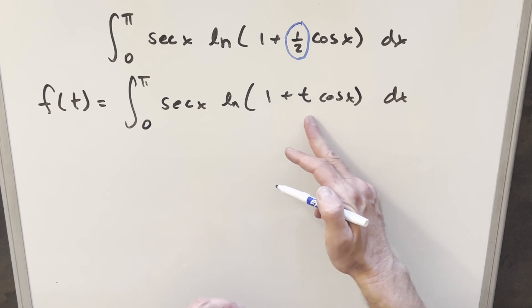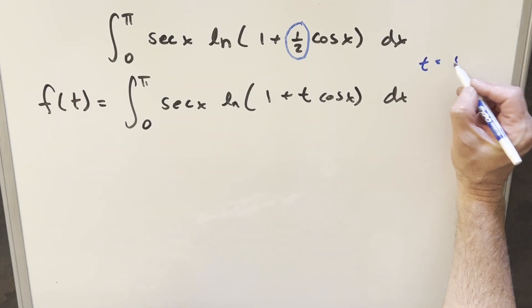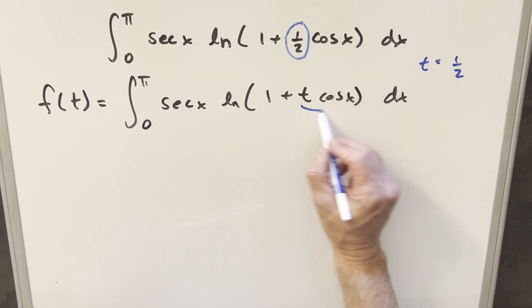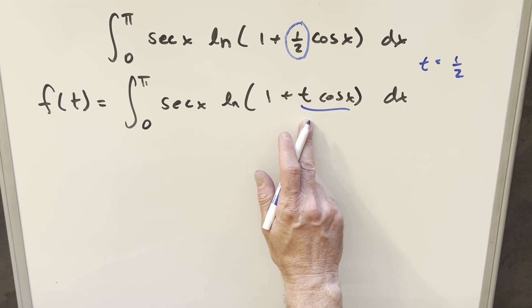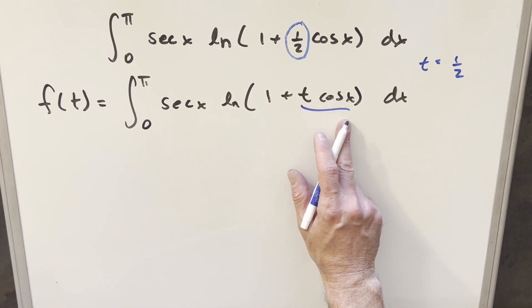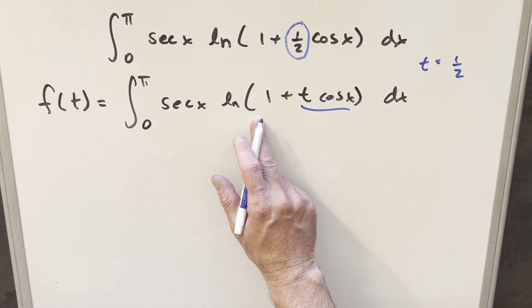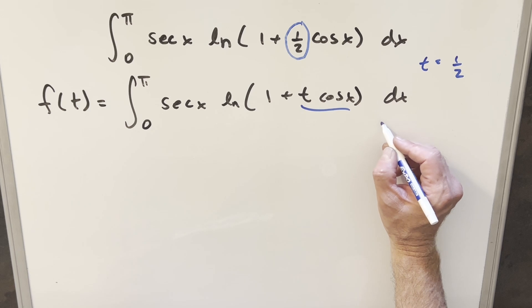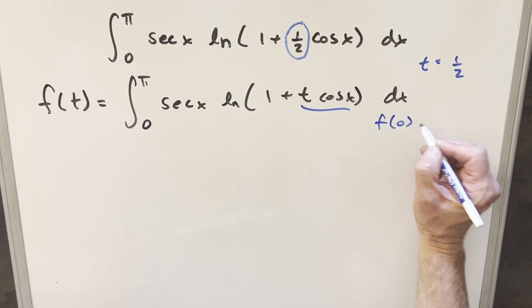So when we do this, what we're saying is our t value is going to be one half. But what we can also use here is what's going to happen when t is zero. When t is zero, it's going to wipe out this and we're going to have natural log of one. The whole thing is going to become zero. So for our f of zero value, we know that's going to be just a zero.